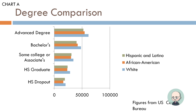First, we have Chart A — a degree comparison. The various bars correspond to colors representing certain groups: green is Hispanic or Latino persons, orange is African American persons, and blue is Caucasian or white persons. The dollar amounts come from the U.S. Census Bureau. The chart covers advanced degree, bachelor's degree, some college or associates, high school graduate, and high school dropout, so we can approximate salary numbers from Chart A.